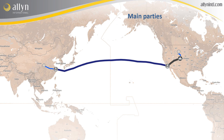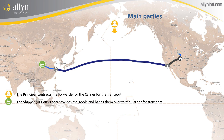There are many parties involved in the transportation of cargo, and on this slide we'll review some of the main ones. First, we find the principal — the party who contracts the forwarder or the carrier for the transport, and who requests and generally pays for it. Then, we find the shipper, also called consignor, which is the party who provides the goods and hands them over to the carrier for transport — generally the place from where the goods are shipped. The receiver, or consignee, is the party to whom the freight is shipped, who will receive it, and is generally the destination location.